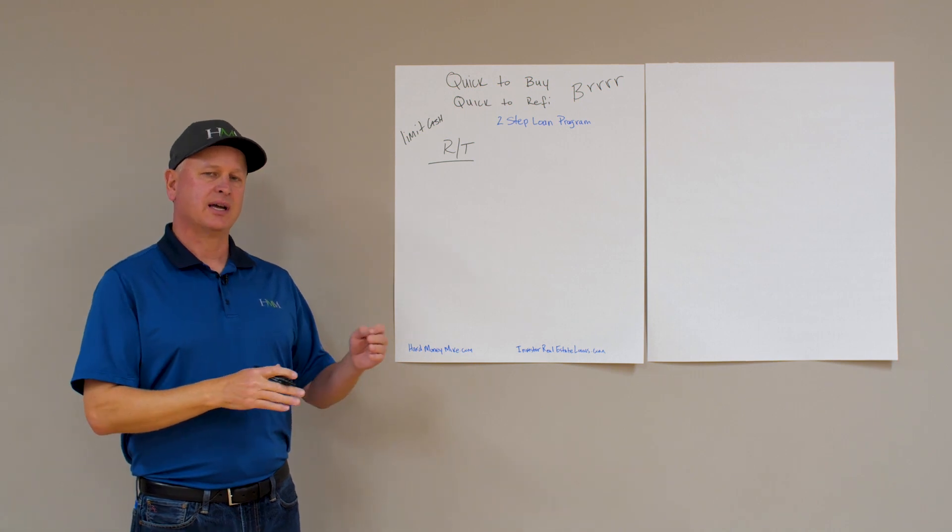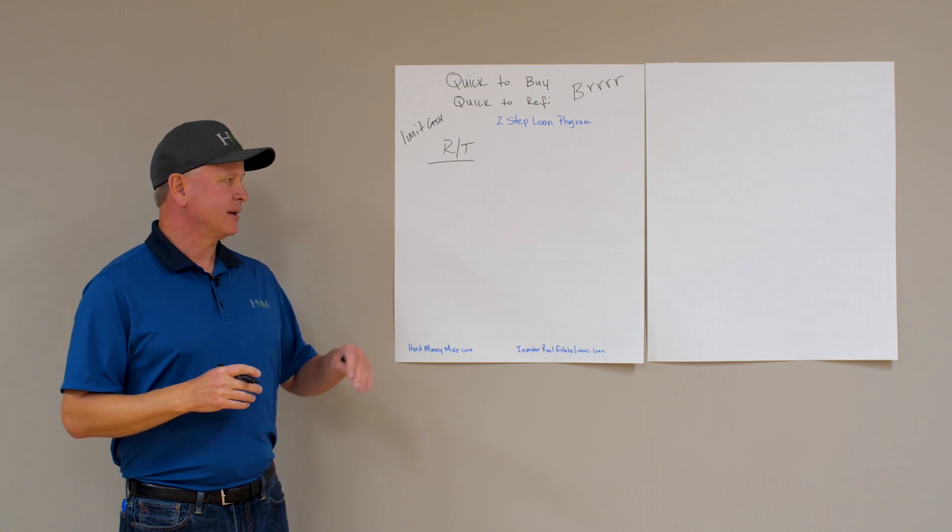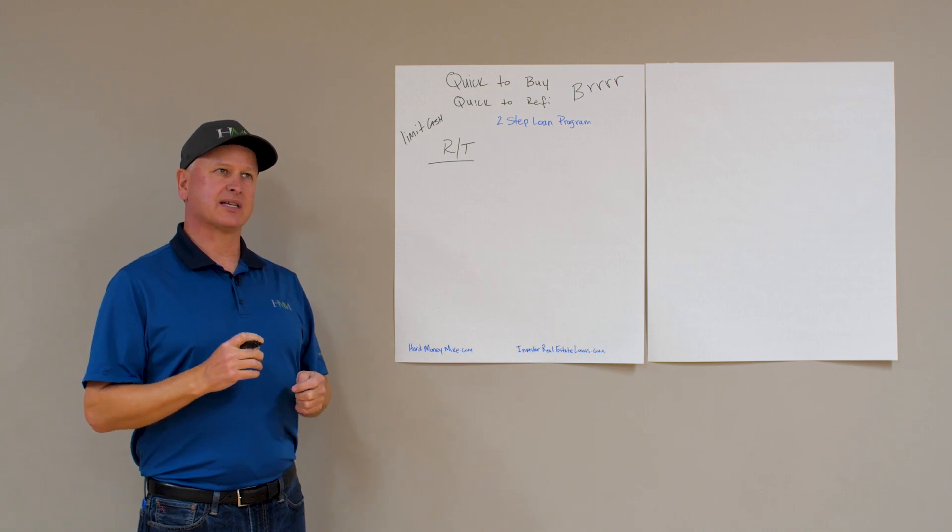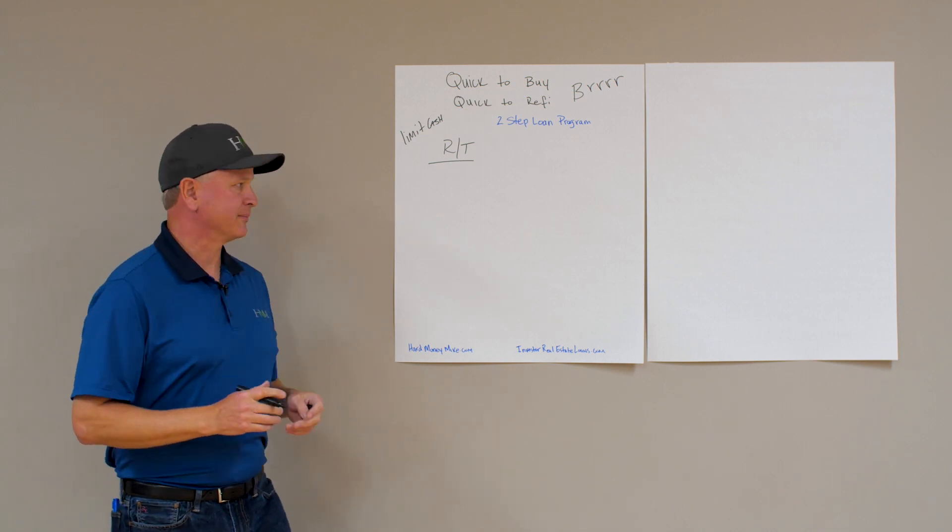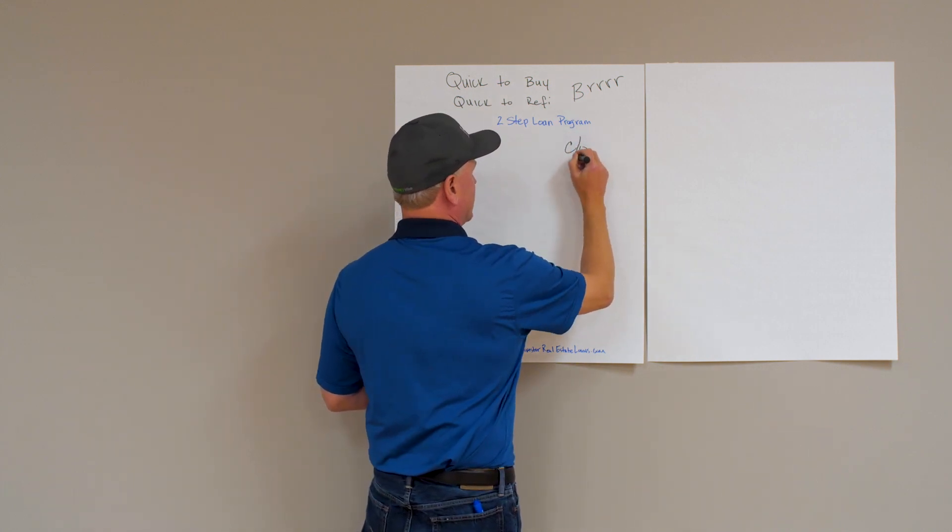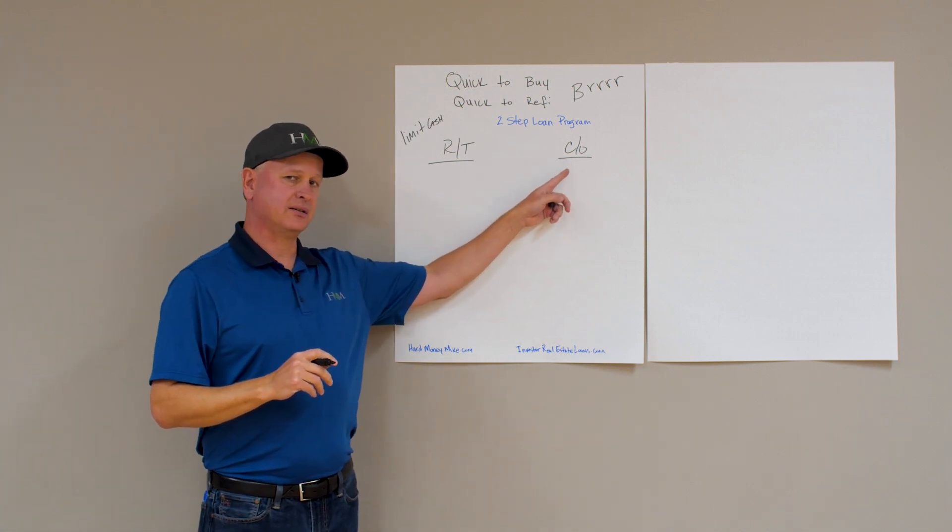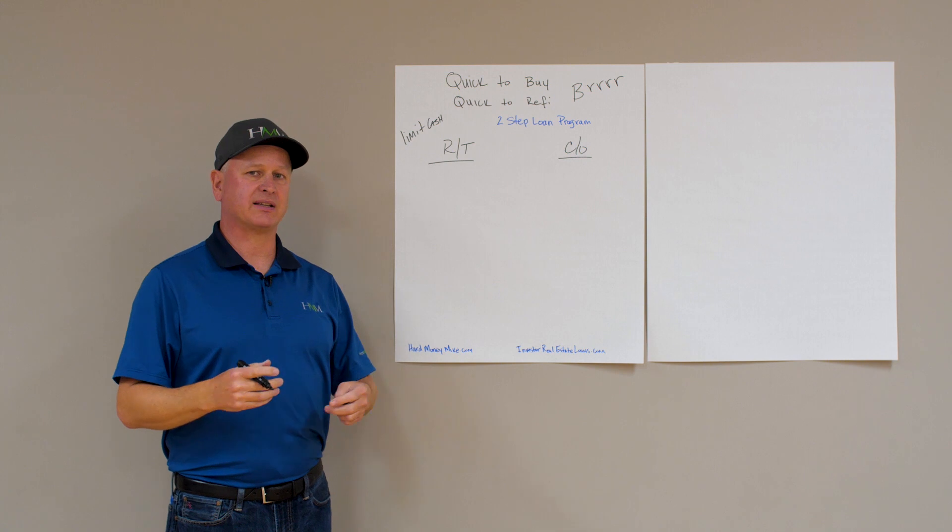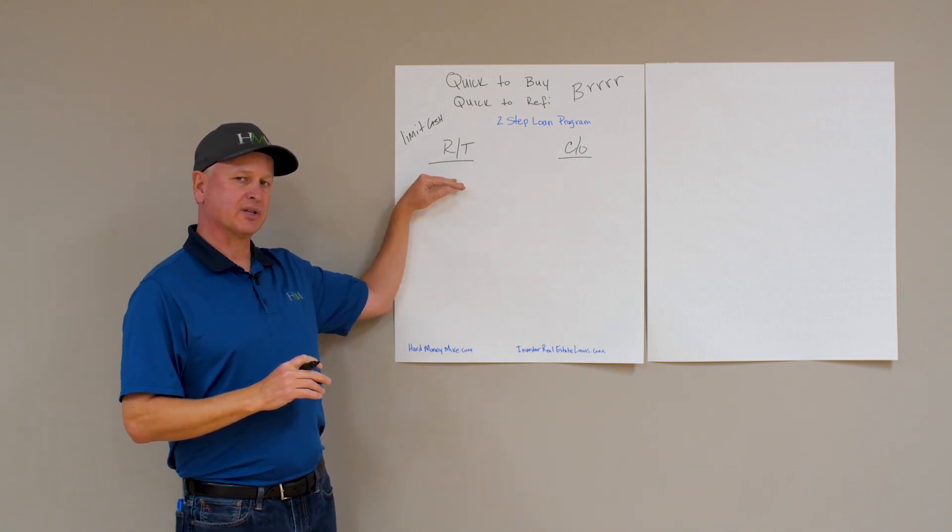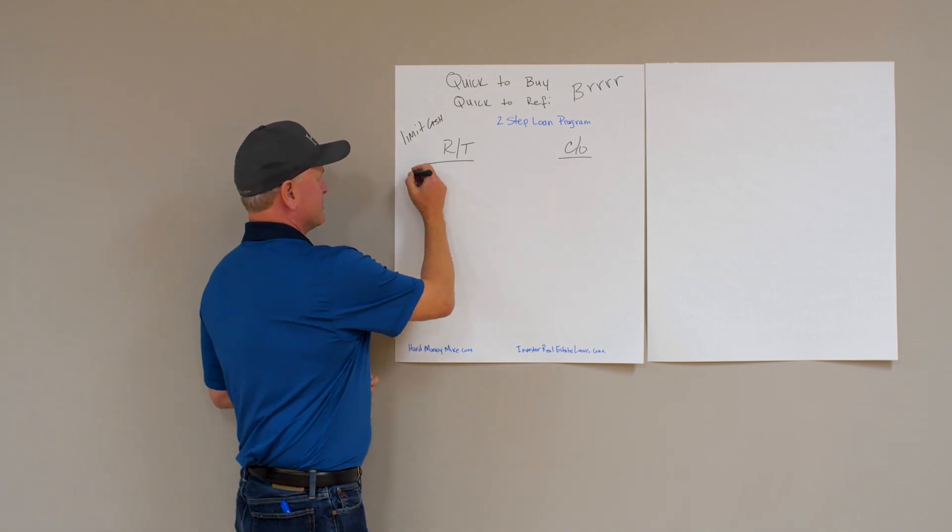Rate and term is where you just pay off your current mortgage. There might be some incidental cash out, maybe one or two percent, but it's really just paying off that first mortgage. If it's not rate and term, then it's considered a cash out loan. Even if in this loan you're paying off your first and paying off other people, vendors, maybe your money partner, if the loan is not going to pay off the first lien, it's considered a cash out. Where does that come into play? Well, there's three things.